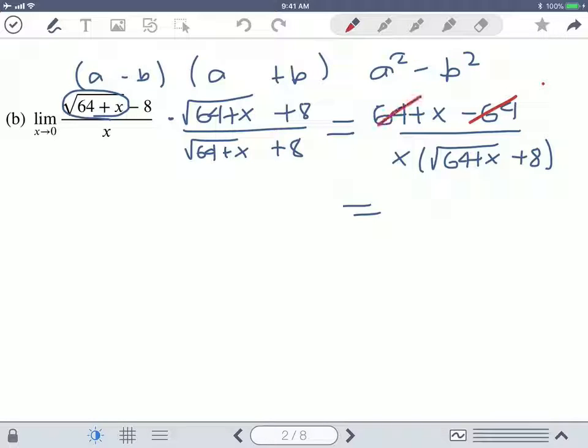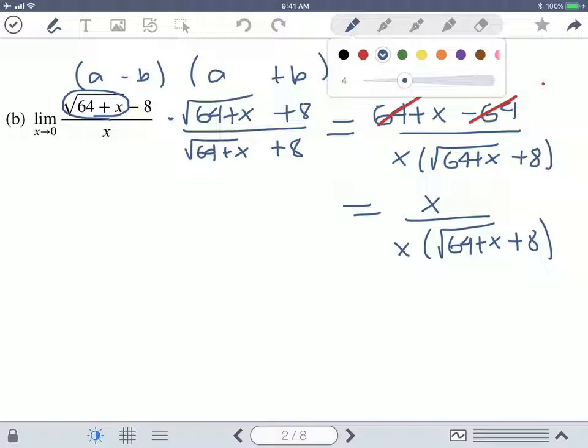So what should happen, the 64s go out and we have a nice x over x times the root of 64 plus x plus eight. So this is why you don't want to distribute this x on the bottom because now the x is going to cancel.